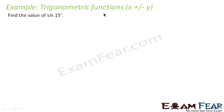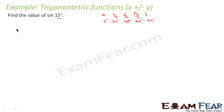Let's find the value of sin 15°. From our table we have values: 0, 1/2, 1/√2, √3/2, 1 for 0°, 30°, 45°, 60°, 90°. We know sin 30°, sin 45°, sin 60°, sin 90°, but we don't know sin 15°. So we write sin 15° as sin(45° − 30°) and apply the formula.